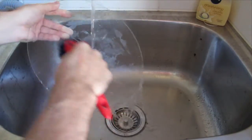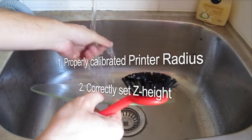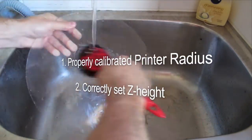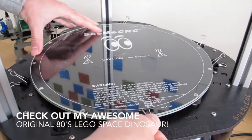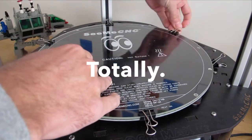There are two things I'll assume you have ready for this video. One, a properly calibrated printer radius, and two, a correctly set Z height. These are covered in more detail in the video linked in the description, as well as in the manual, which you totally should have read.